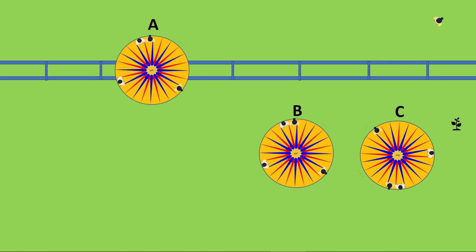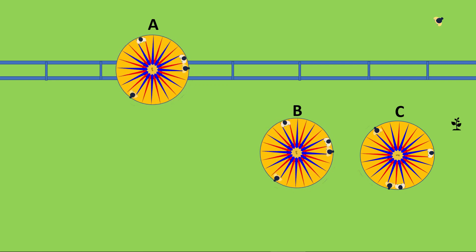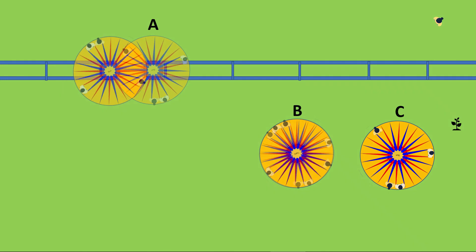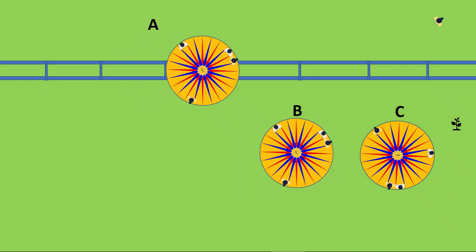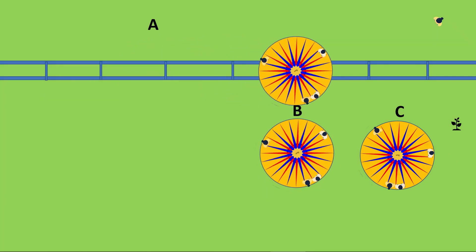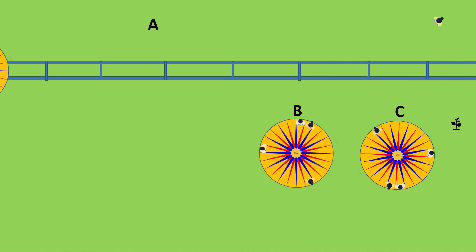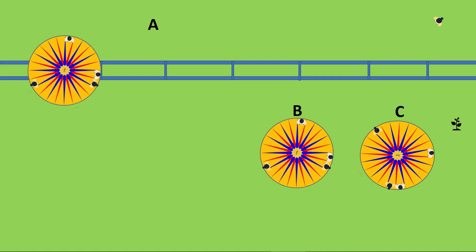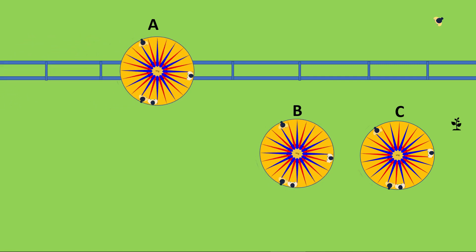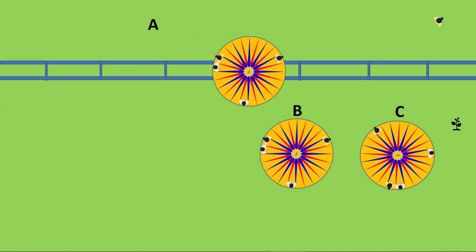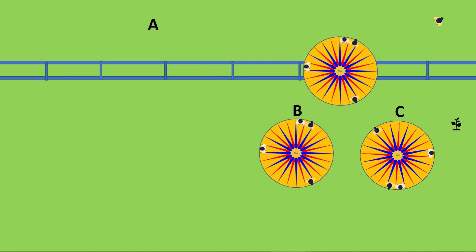What happens when the two motions are combined, rotation and moving along the track? Your motion is now a combination of the two velocities, three miles per hour and four miles per hour.